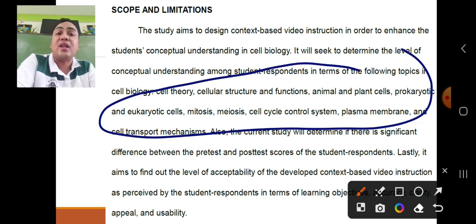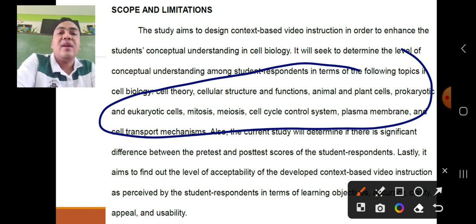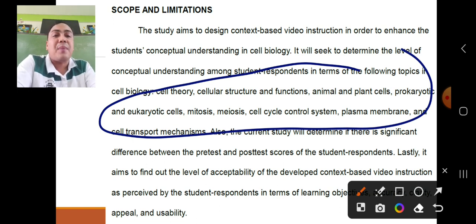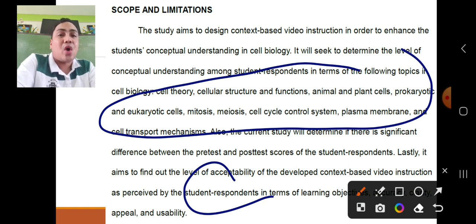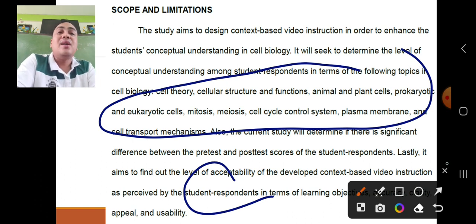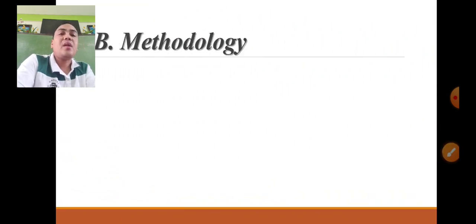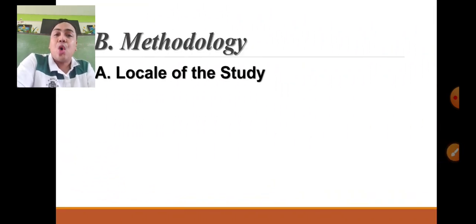Scope pertains to the focus and coverage. The coverage of this study will be the lessons for the first quarter of the first semester only. Moreover, its main focus will be grade 11 STEM strand students only, since general biology one is not offered in other strands. That's how you write scope — the coverage, the focus, the boundary. Limitation refers to the constraints — the weaknesses of the study — and this limitation can generate a new set of problems for diagnosing.